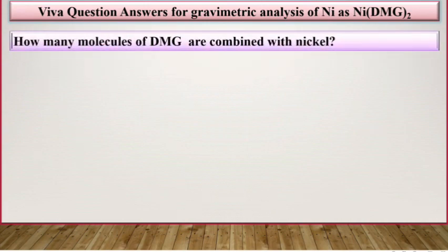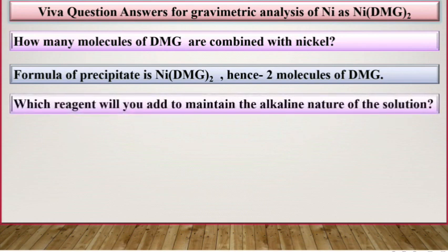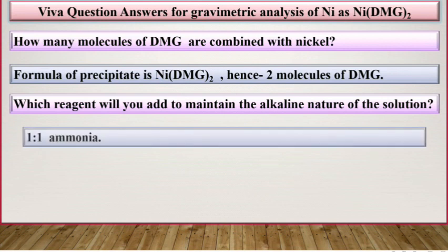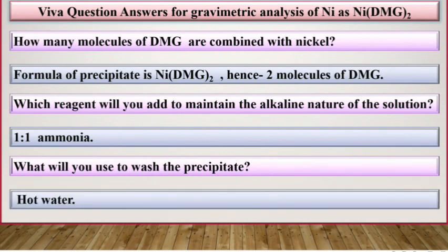How many molecules of DMG are combined with nickel? The formula of the precipitate is Ni(DMG)₂; hence, two molecules of DMG are combined with nickel. Which reagent will you add to maintain the alkaline nature of the solution? 1:1 ammonia. What will you use to wash the precipitate? Hot water.